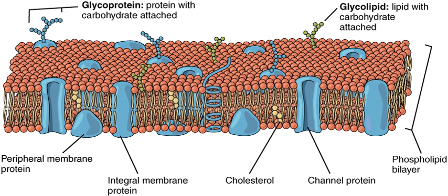A biological membrane or biomembrane is an enclosing or separating membrane that acts as a selectively permeable barrier within living things. Biological membranes, in the form of eukaryotic cell membranes, consist of a phospholipid bilayer with embedded, integral and peripheral proteins used in communication and transportation of chemicals and ions. The bulk of lipid in a cell membrane provides a fluid matrix for proteins to rotate and laterally diffuse for physiological functioning.